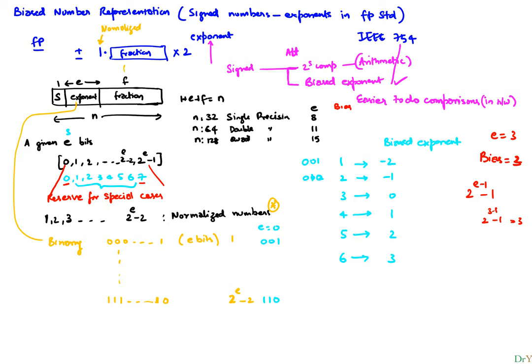For single precision (e=8), the bias is 2^(8-1) minus 1 equals 2^7 minus 1 equals 127. For double precision (e=11), it is 2^10 minus 1 equals 1023. For quad precision (e=15), it is 2^14 minus 1.